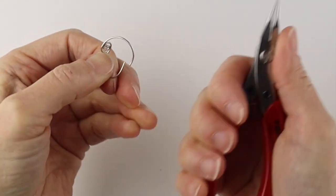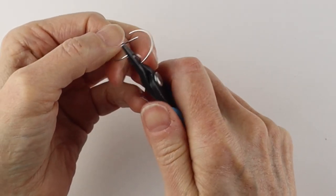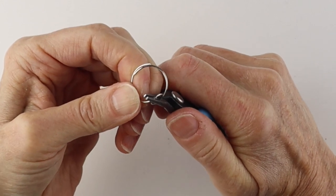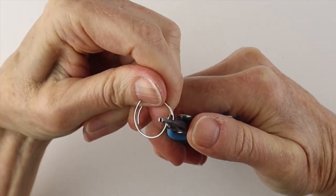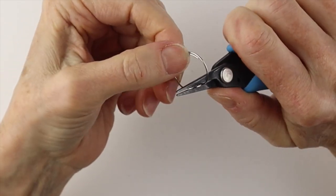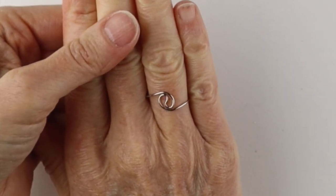If you want to do loops to finish these ends off so they're not sharp, you can do that too. Otherwise, you can just hold it with your flat pliers and bring these in so it hugs the finger. Just wiggle them around until they're lined up. So this is the basic ring.